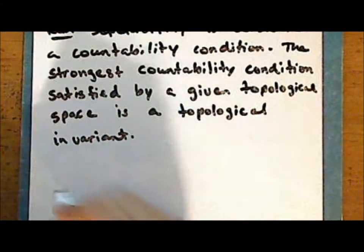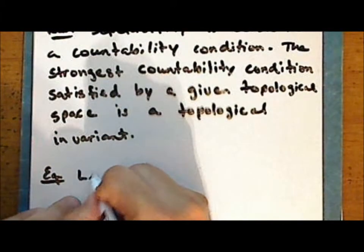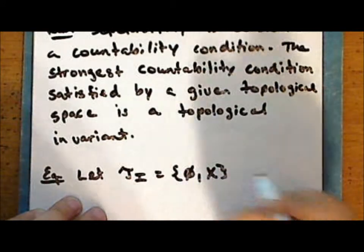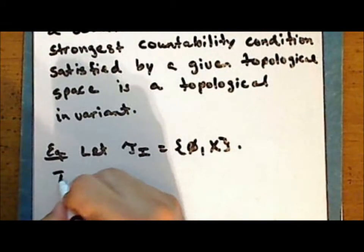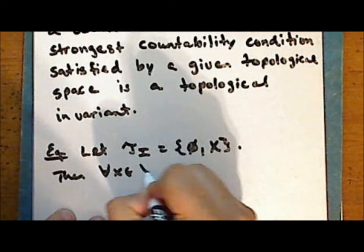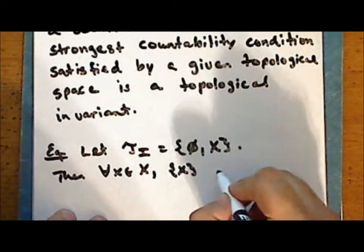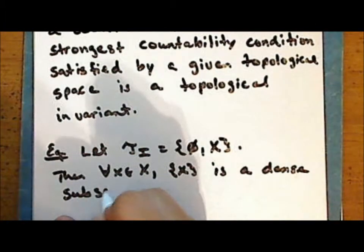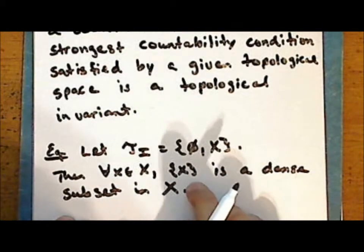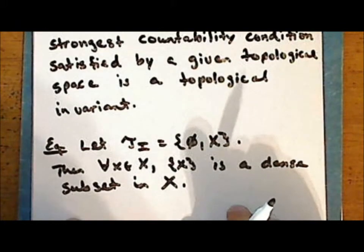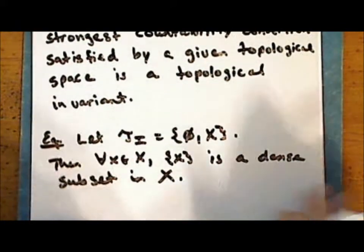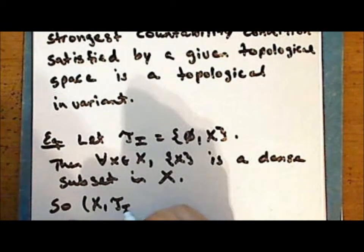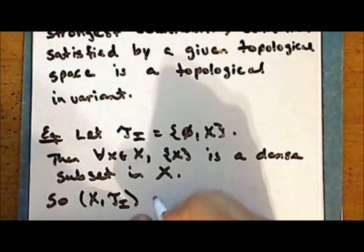Let tau sub i be the indiscrete or trivial topology on the set X. Then for every point x in the space, the singleton containing that point is a dense subset in the space X. As it is a finite dense set, it is certainly countable, and so the indiscrete topological space is separable.